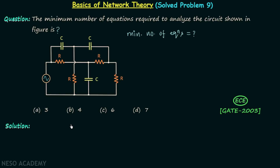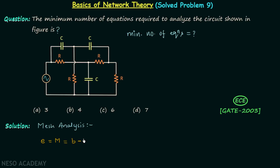There are four options given in the question. If you remember the very first lecture on mesh analysis, I gave you a formula to find the minimum number of equations to perform the analysis of the network using mesh analysis. The minimum number of equations E is equal to the total number of meshes, which equals the number of branches minus the number of principal nodes minus 1.